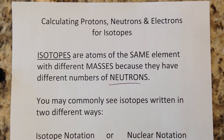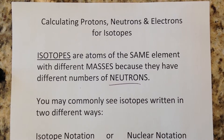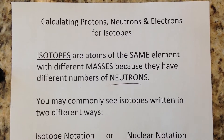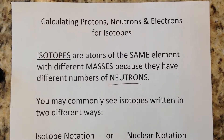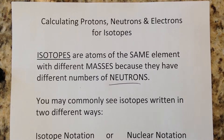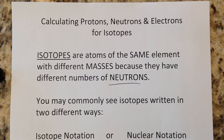This lesson is geared towards students who already have some knowledge of how to calculate protons, neutrons, and electrons for a neutral atom. This is mostly the same thing, especially mathematically. However, we're bringing something new into this one and we're going to talk about isotopes.